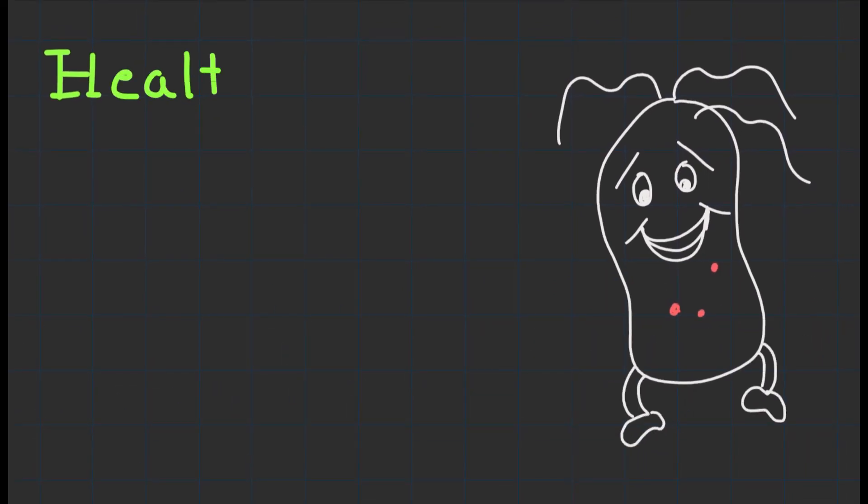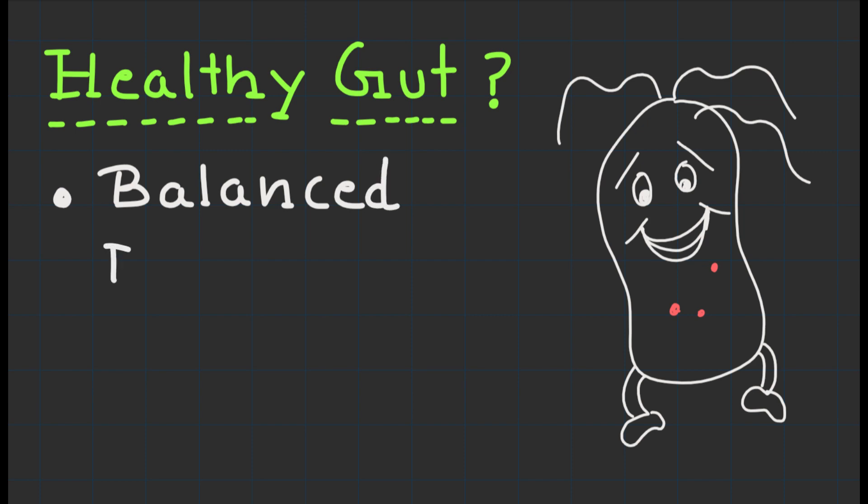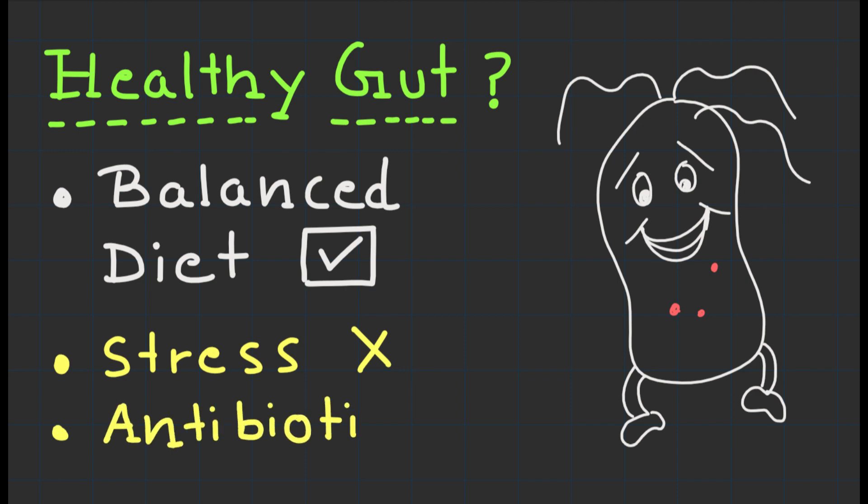So how can we nurture a healthy gut microbiota? Well, a balanced and diverse diet rich in fibers, fruits, vegetables, and fermented foods can provide the necessary nutrients to support a flourishing microbiome community. Additionally, reducing stress, exercising regularly, and avoiding unnecessary antibiotic use can also contribute to a healthy gut.